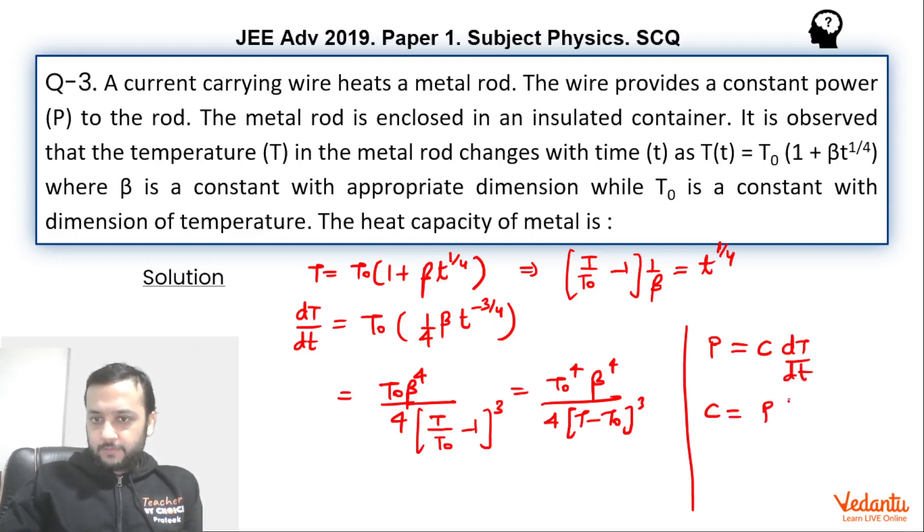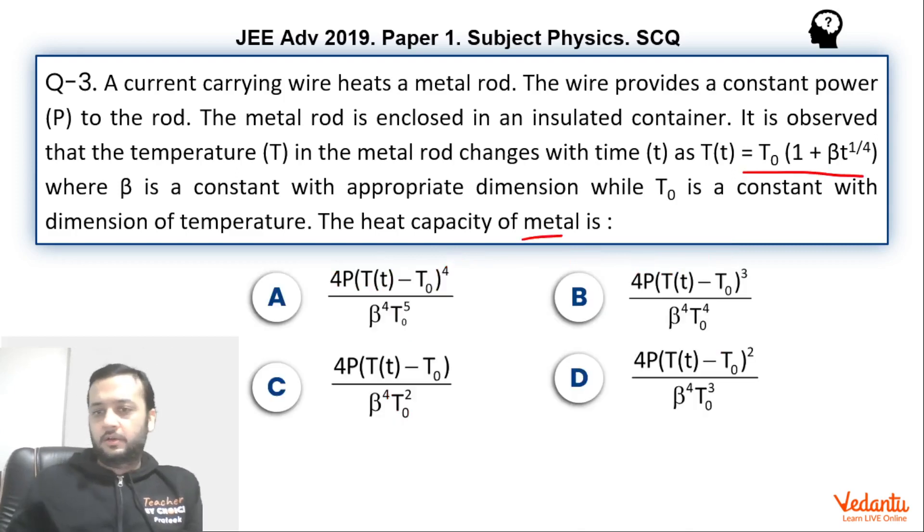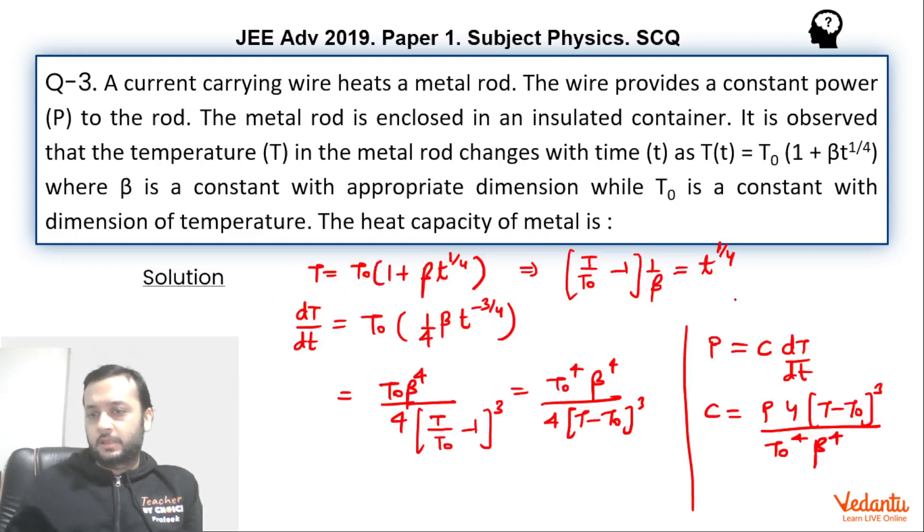So this becomes power into 4 into T minus T₀ whole cube divided by T₀ to the power 4 into beta to the power 4. So this is our answer. Option B matches 4P into temperature minus T₀ whole cube which is over here upon T₀ to the power 4 into beta to the power 4.